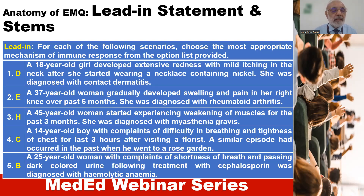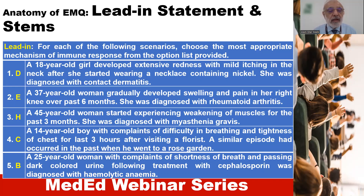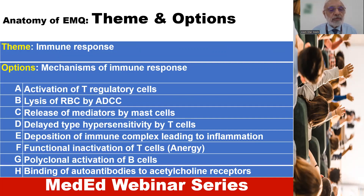Let us look at stem number four, which describes a situation: a 14-year-old boy with complaints of difficulty in breathing and tightness of chest for the last three hours after visiting a florist. A similar episode had occurred in the past when he went to a rose garden. Students are required to match this stem with one of the options provided in the option list. The most appropriate choice in this case would be release of mediators by mast cells.